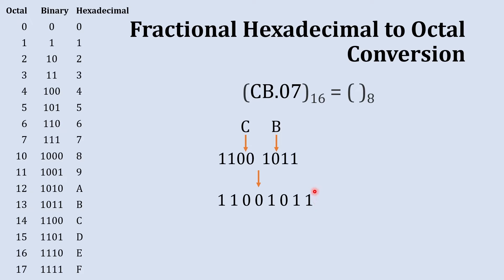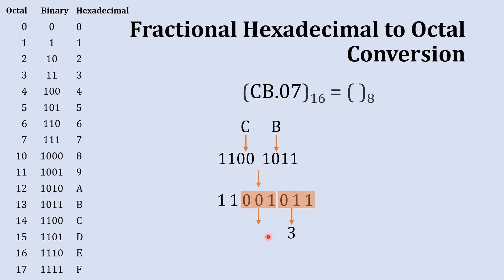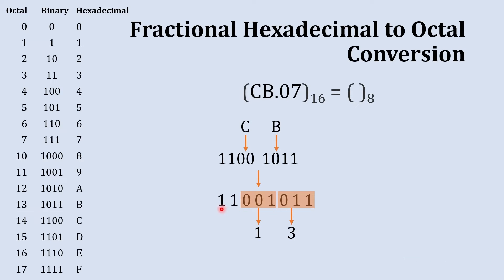Starting from the right, the first set of three digits is 011, which is 3 in octal. The next set is 001, which is 1 in octal. We have only two digits remaining, so we add one zero on the left-hand side to make a set of three: 011, which is 3 in octal. So the octal conversion of the whole number part is 313.